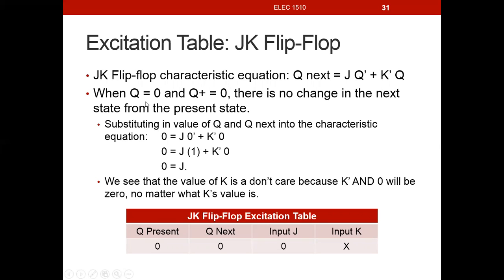We're going to work through developing the excitation table. The JK flip-flop excitation table will have Q in the present state and Q in the next state — the same columns as D — but we have two inputs to determine: what we want J to be and what we want K to be. We'll start with when Q in the present state is 0 and Q in the next state is 0, meaning there is no change in the next state from the present state.